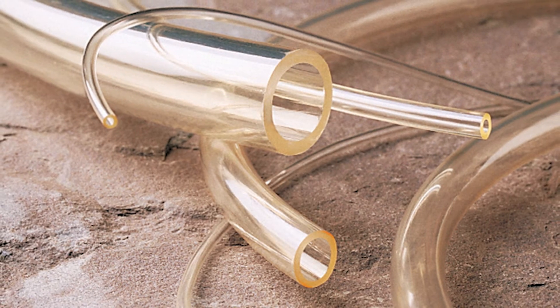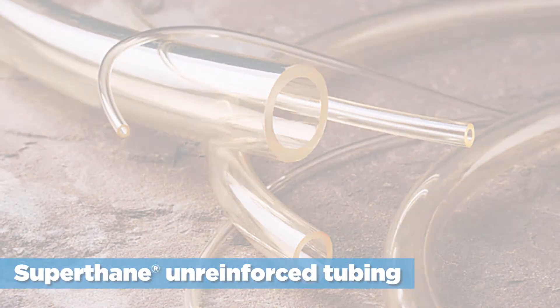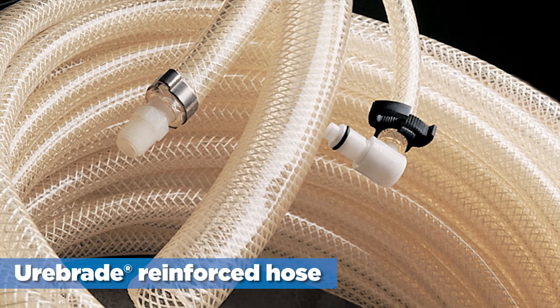New Age Industries manufactures two styles of polyurethane: superthane unreinforced tubing and urobraid-reinforced hose for higher pressure uses.